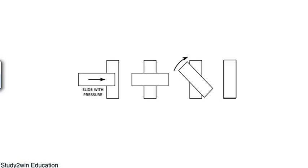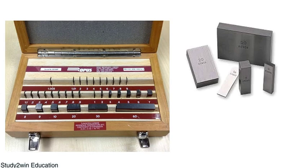Slip gauges are nothing but metallic blocks, like shown in the diagram. This is one slip gauge, this is another slip gauge, and there are other slip gauges also. This is the slip gauge box — in this wooden box, the slip gauge set is kept. There are various sizes of slip gauge, and each slip gauge has its own size, which is the distance between its two polished surfaces. The dimension of each slip gauge differs from another.